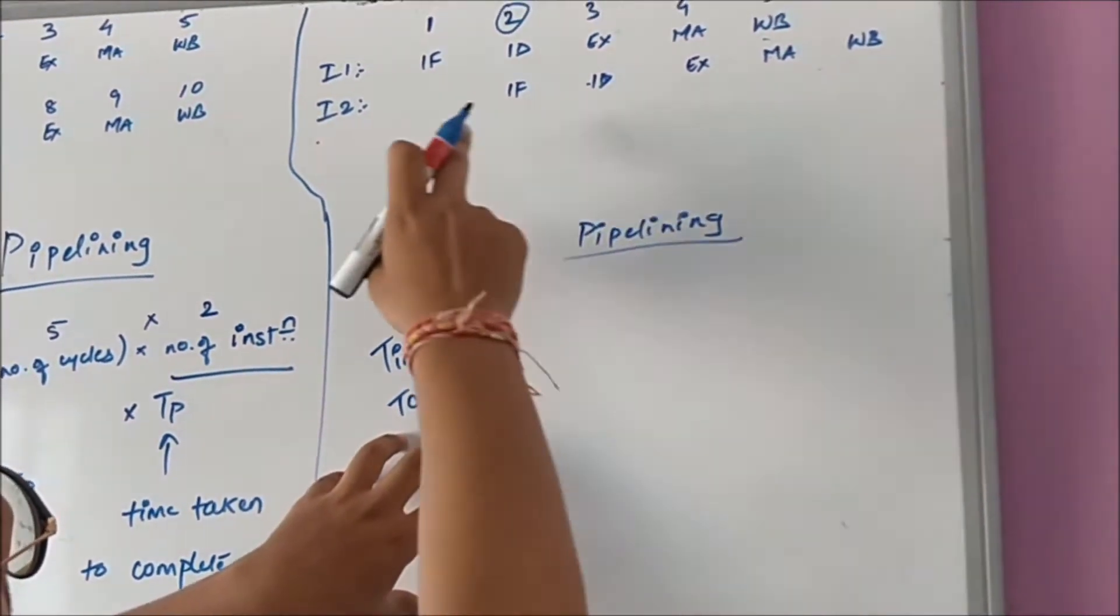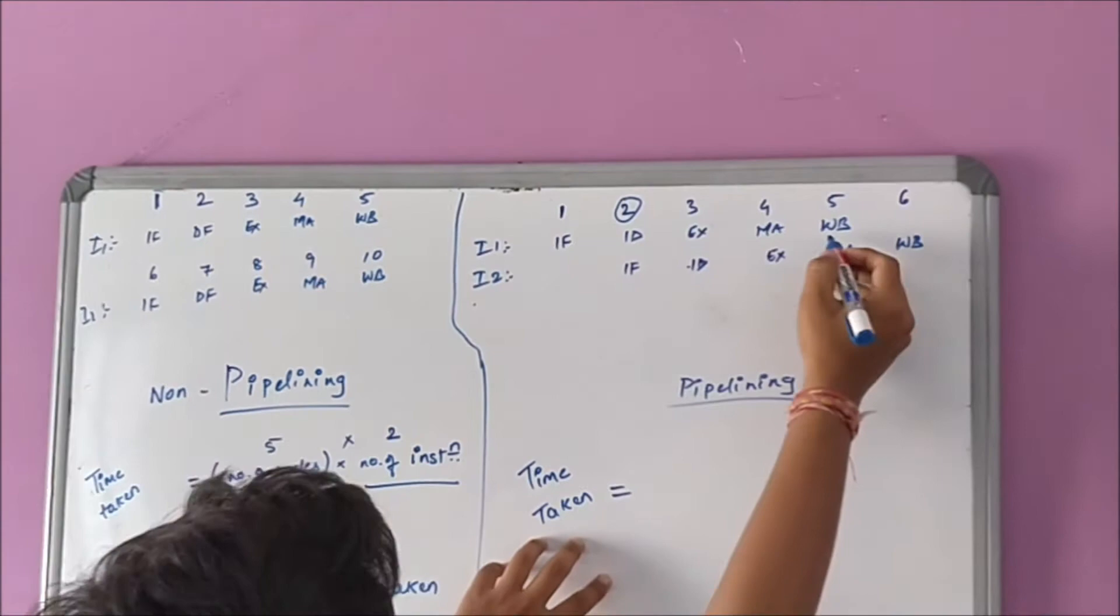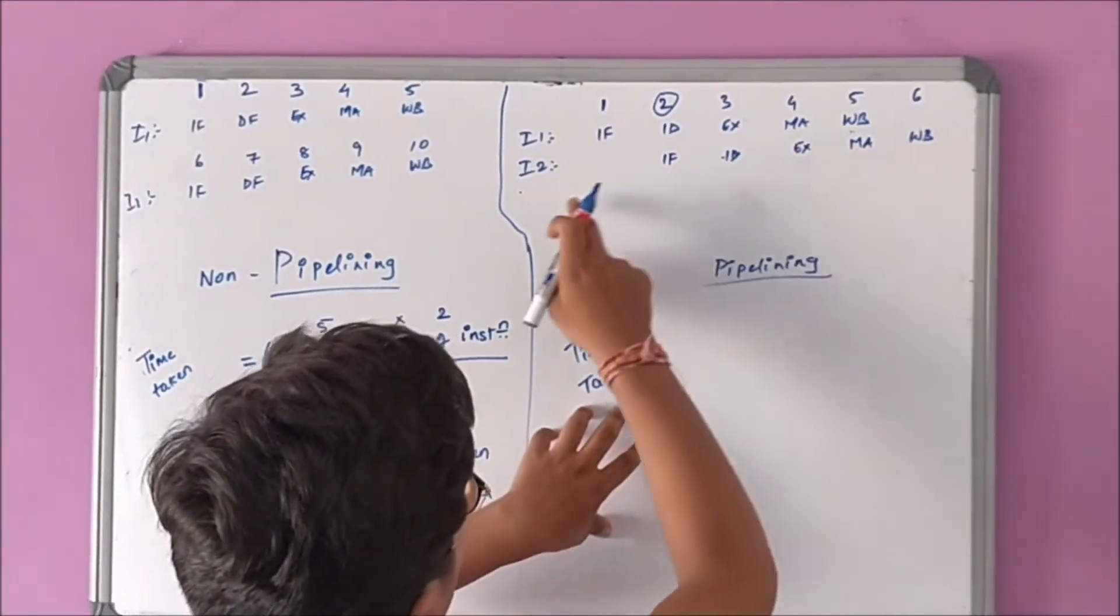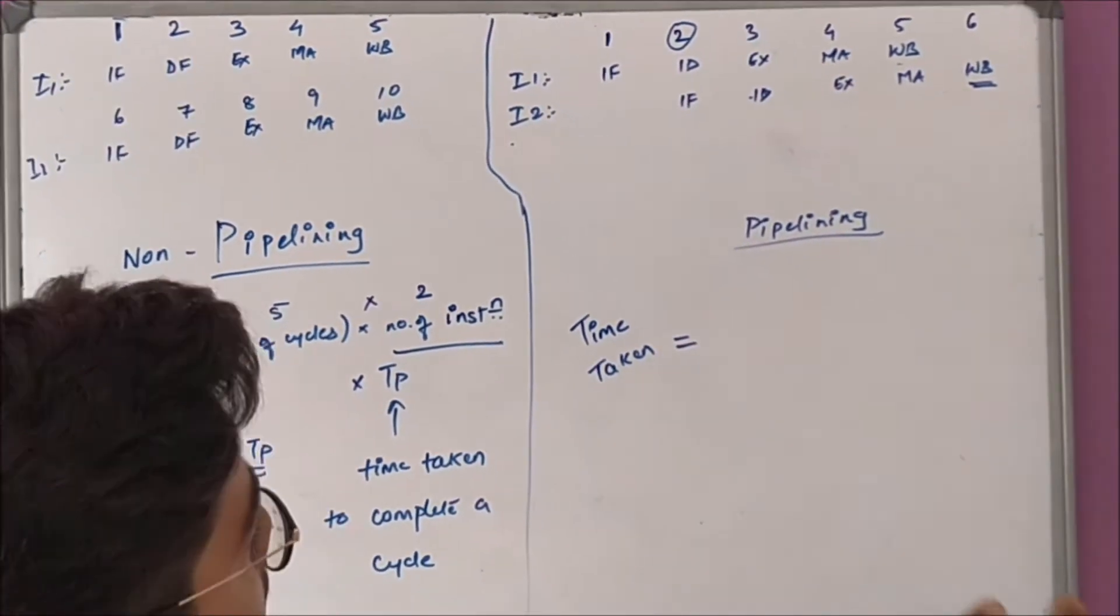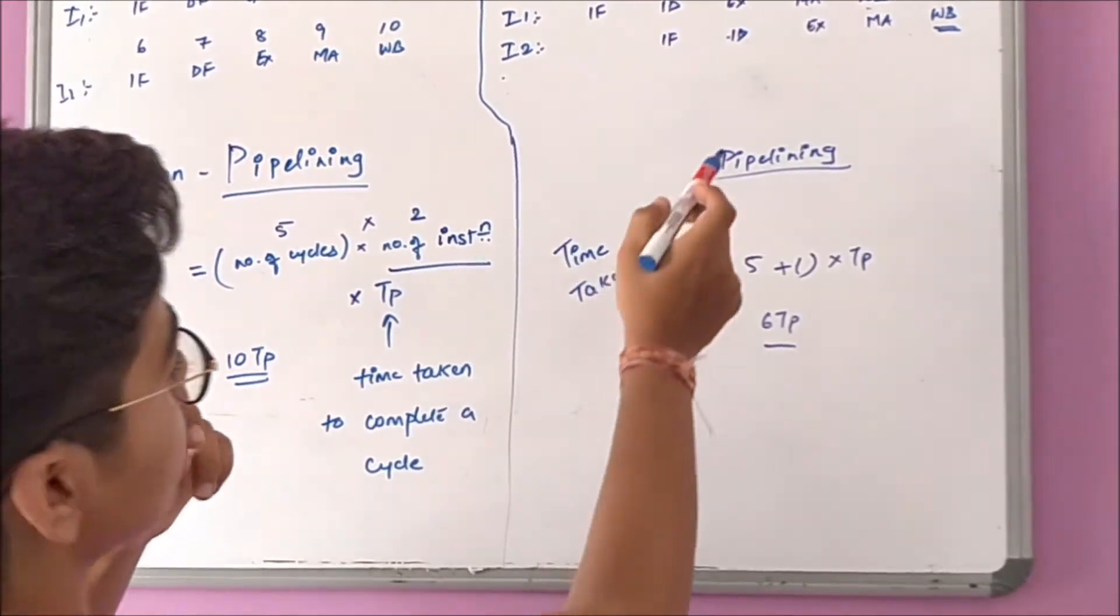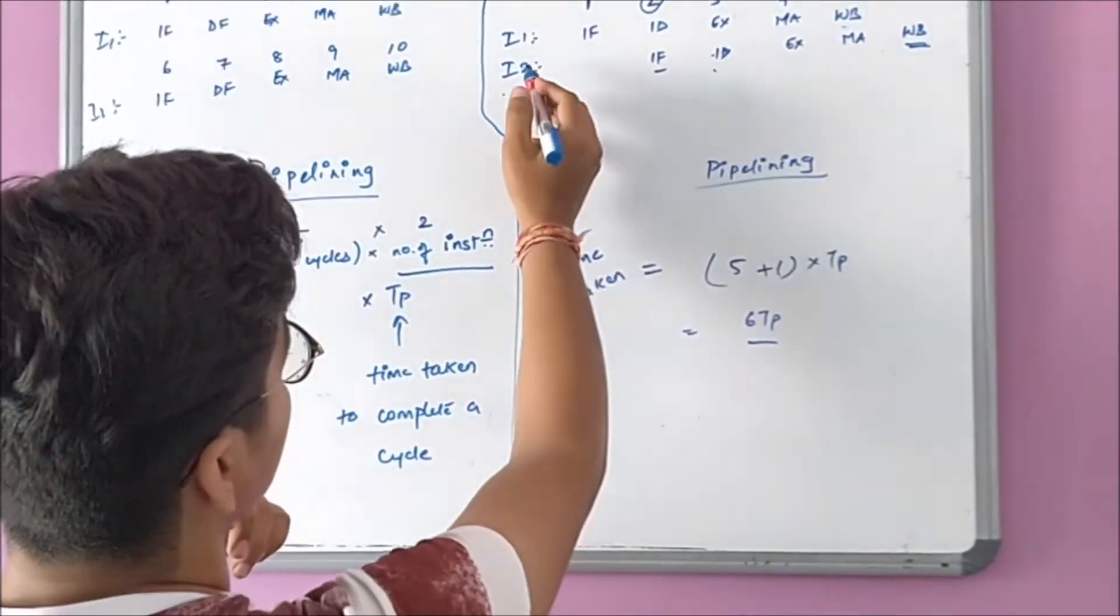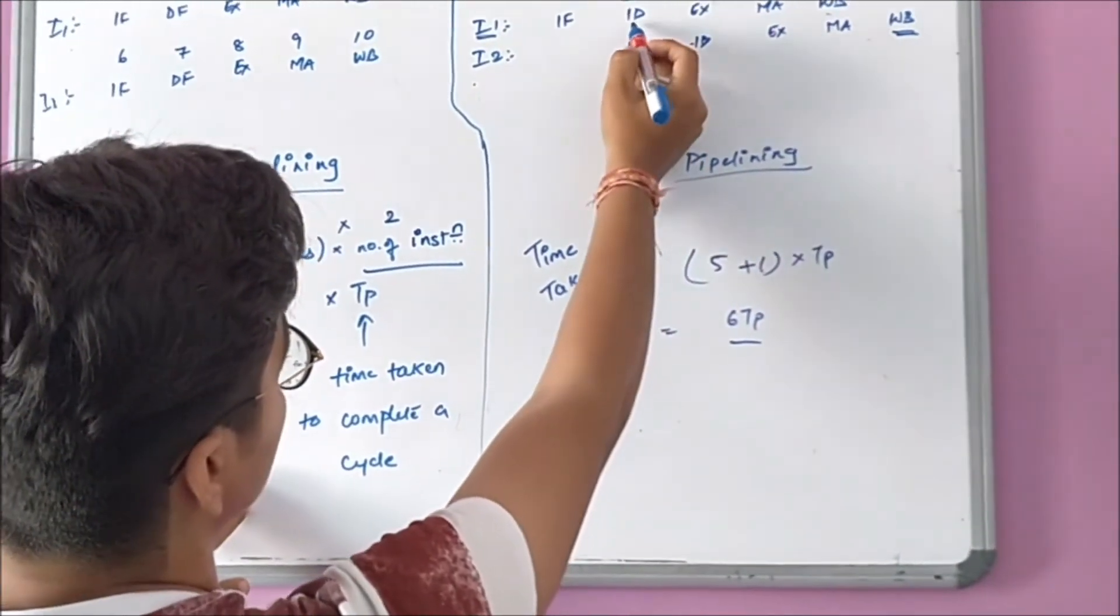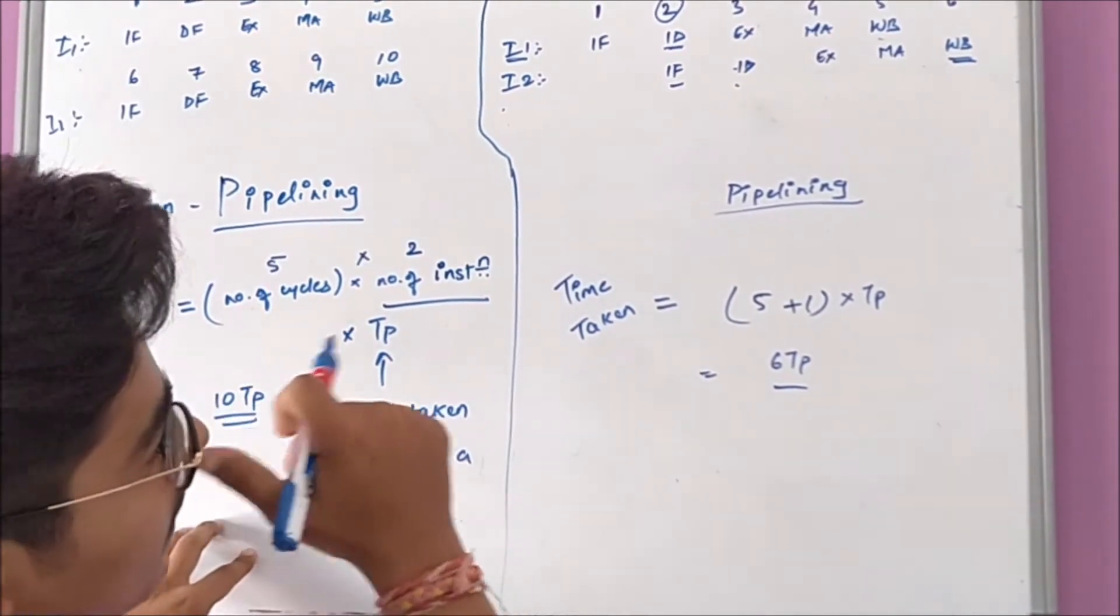If we consider the time taken by this pipelining architecture, we can see that number of cycles for a single instruction is five. For I1 is five. For I2, it will be completing at six. That is, only one cycle is needed extra for completing I2. Every other phase will be done in parallel with the cycles which are needed in I1. IF is used with ID in the same cycle, the second cycle.